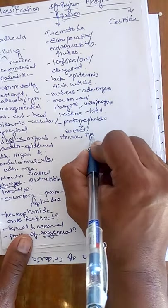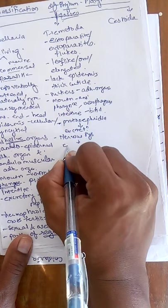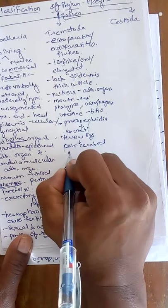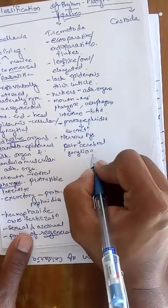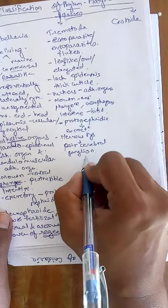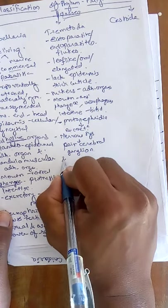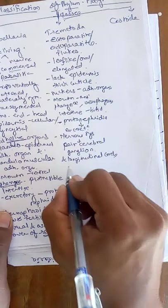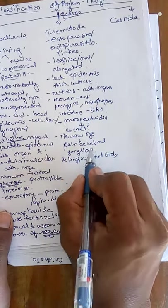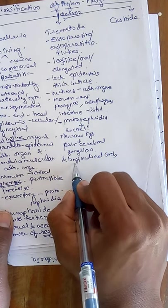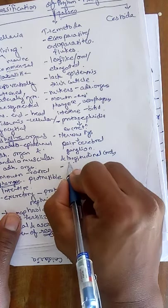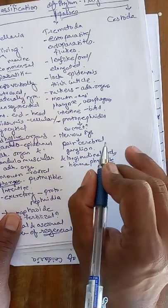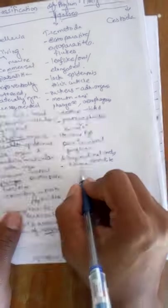The nervous system consists of paired cerebral ganglia — similar to the brain in higher animals — along with longitudinal cords. The animals are hermaphrodite with a few exceptions. Adults lack sense organs, as they are endoparasites and have no need for them.